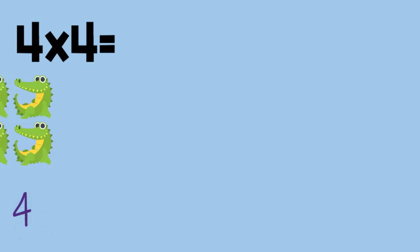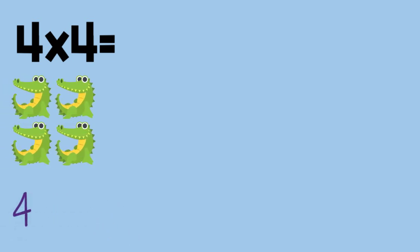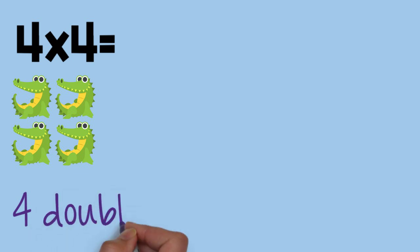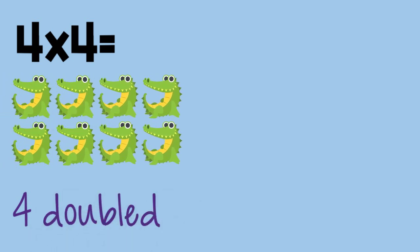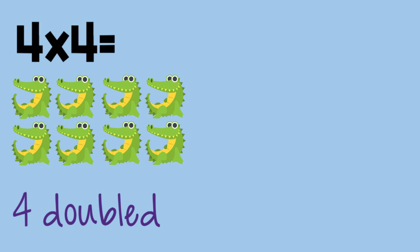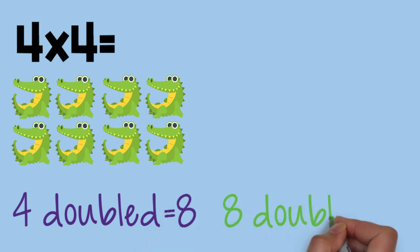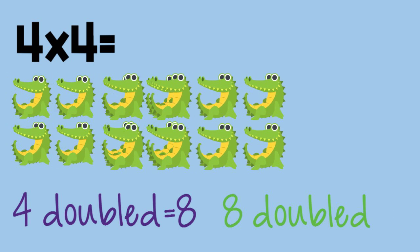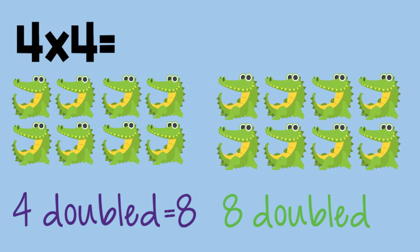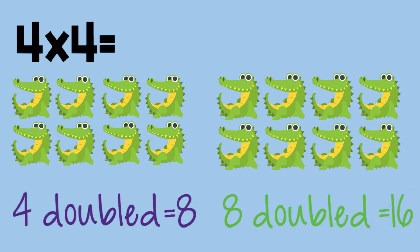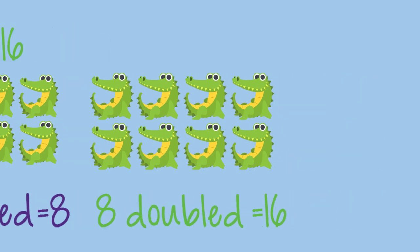Four times four. Four, doubled, is eight. Eight, doubled, is sixteen. Four times four equals sixteen.